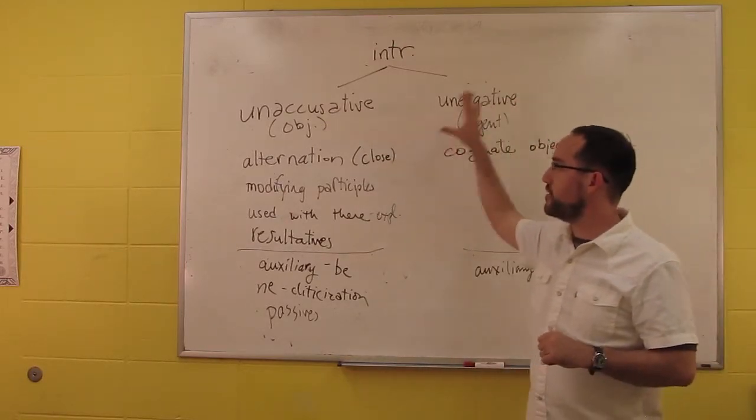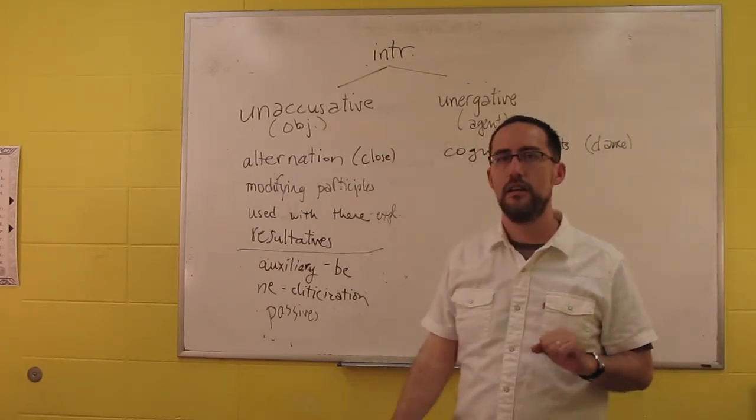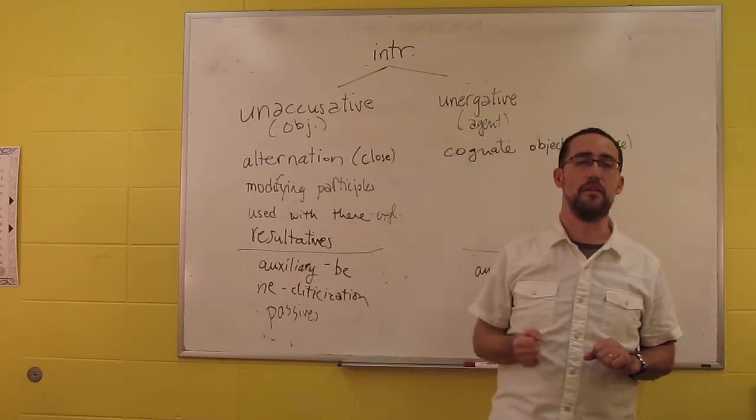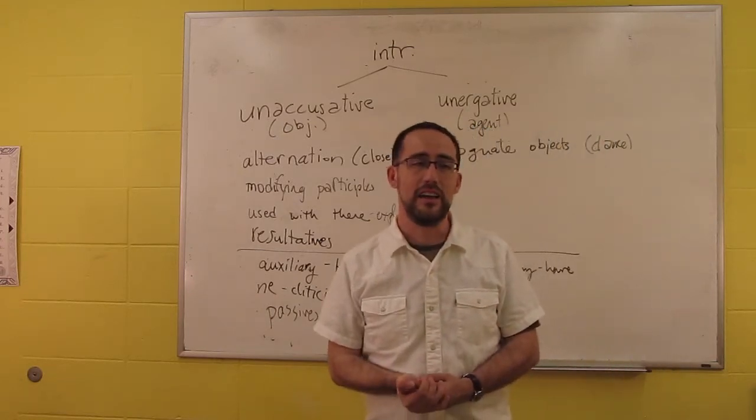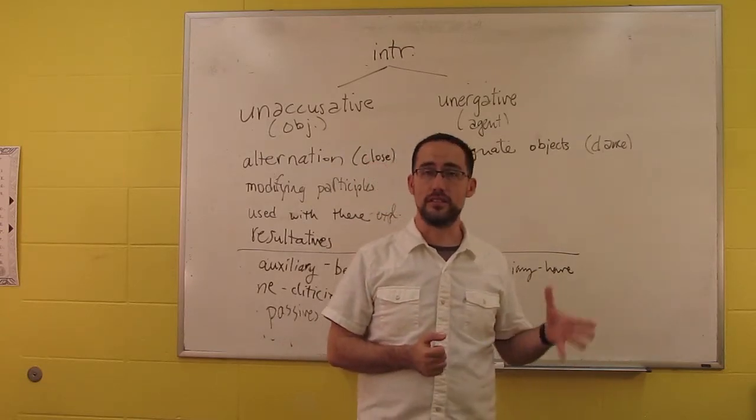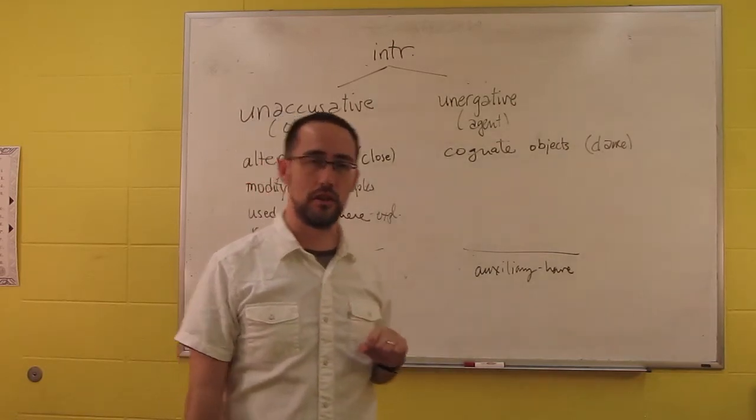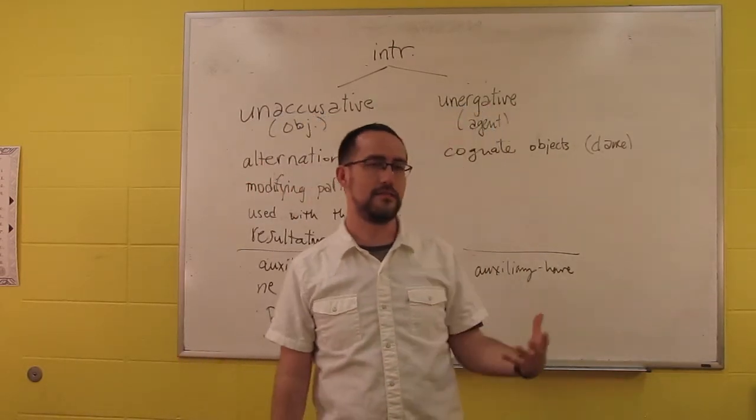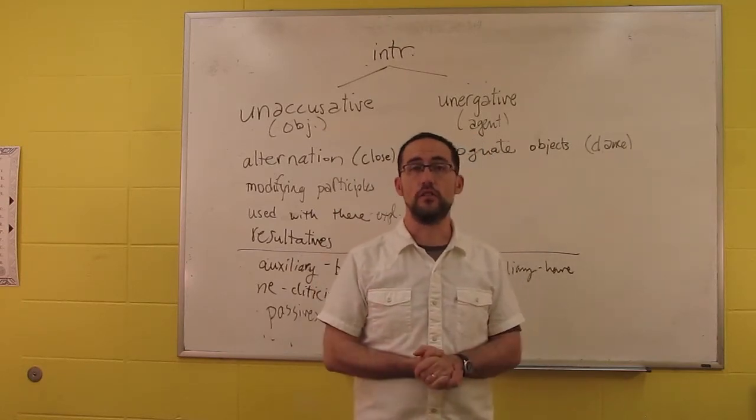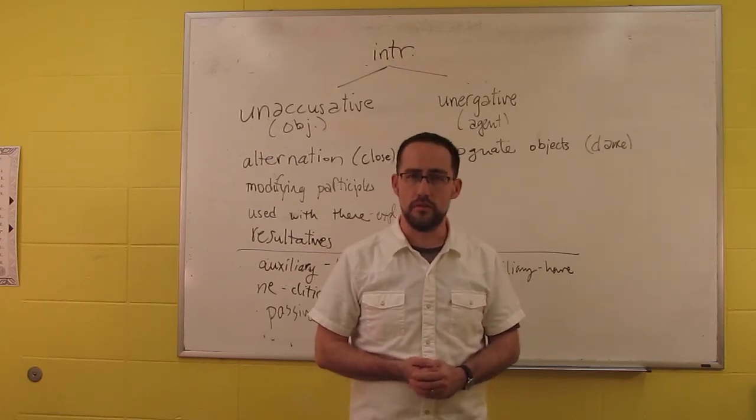We have unaccusatives, we have unergatives. We distinguish intransitives this way. You can use these tests, they're not always 100% perfect, but they're almost 100% perfect and they're extremely reliable for a number of languages. If you're exploring a language that hasn't really been described in too much detail, especially on the semantic end, one thing you can do is try to figure out which intransitives are unaccusative and which ones are unergative. This is a distinction that we'll be using a lot that is essential for understanding argument structure of not only intransitives, but of verbs in general.